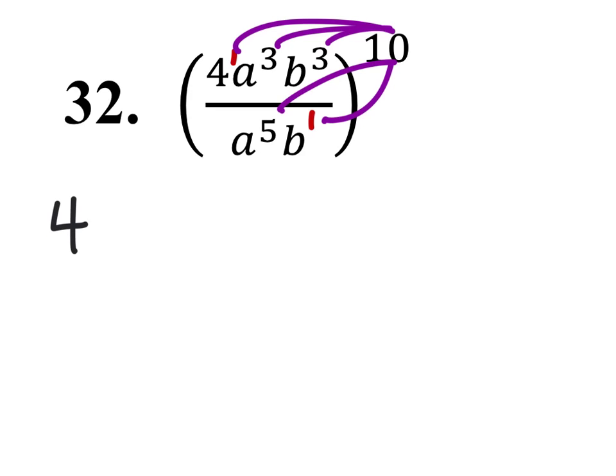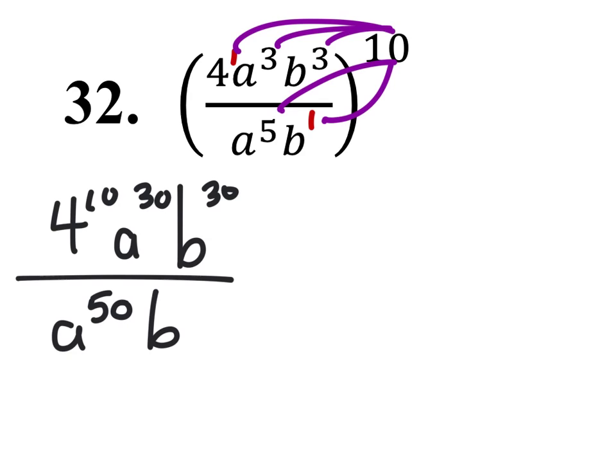So that would be 4 to the power of 10, a to the power of 30, b to the power of 30, all over a to the power of 50, b to the power of 10.